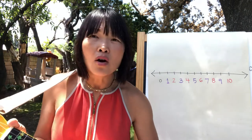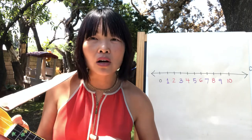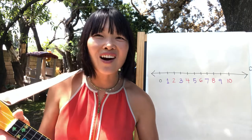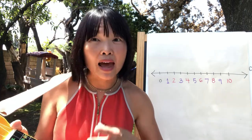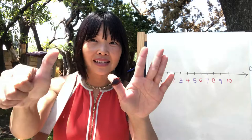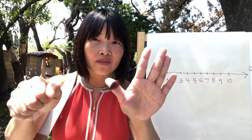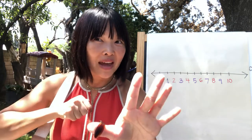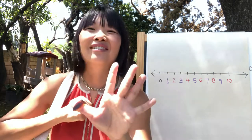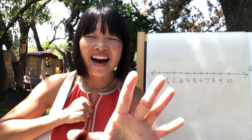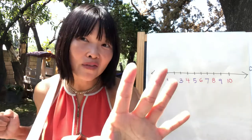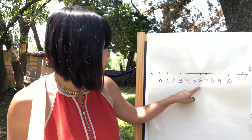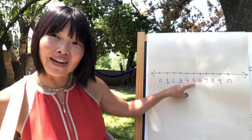There were six in the bed and the little ones said, roll over, roll over. So they all rolled over and one fell out. Six, one falls out — how many? Five. If you said five, you're right. Six, one falls out — there's five.